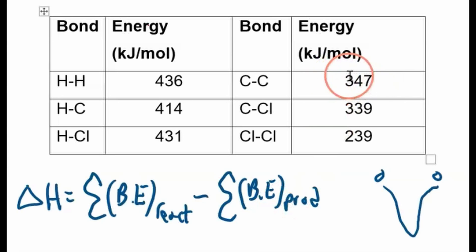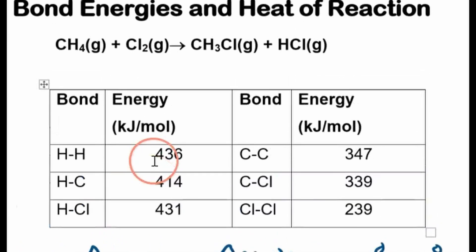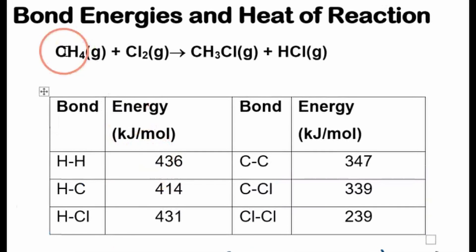And since this is the energy stored in a bond, then this is how much energy is released every time one of these bonds is formed. That's why it's negative. So we'll add them all up. First, we need to break these bonds of the reactants.